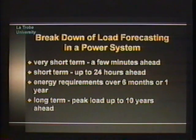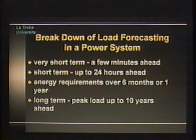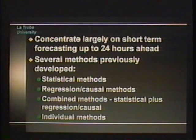When we talk about load forecasting in a power system, we are really talking about several different problems. You could talk about load forecasting for a few minutes ahead, up to 24 or 48 hours ahead, up to six months or a year ahead, and up to 10 years ahead. Each plays a different role — 24 to 48 hours ahead is important for short-term unit commitment; six months to a year for maintenance scheduling and intermediate-term hydrothermal scheduling; up to 10 years for power system planning. In this tutorial, we concentrate specifically on short-term load forecasting for up to 24 hours ahead.